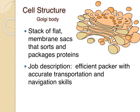The Golgi body is a stack of flat membrane sacs that sort and package proteins. Its job is like a packer and transportation specialist — it takes proteins made on the ribosomes and packages them into vesicles. You can see those circles coming off the Golgi body; those vesicles package proteins like little boxes and ship them to wherever they need to go.